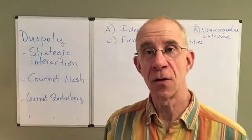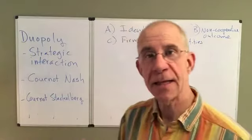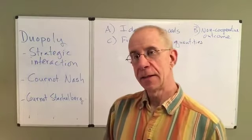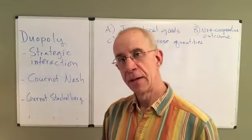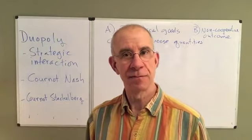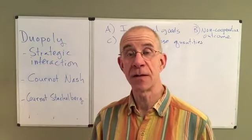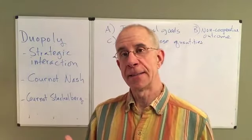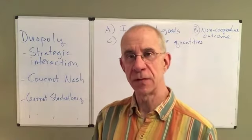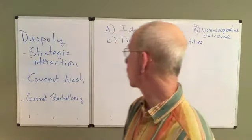Perfect competition and monopoly are useful tools to get a sense of how competitive a market might be and how closely the costs of production are mirrored in the price. But in many instances, it isn't just one firm and it's not many firms. Sometimes there are cases where there may be relatively few firms, even a duopoly. I want to formalize some of the concepts of duopoly in this first of two videos where we're going to be looking at the strategic interaction between two firms in a duopoly.